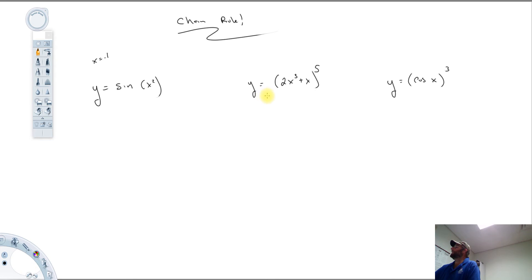Let's take a look at example two here. So again, the inner function is the 2x cubed plus x, right? Then whatever number that works out to be, that's raised to the fifth power. So there's an outer function there. And then the last example here, the inner function is the cosine x. The outer function is the cubic power.